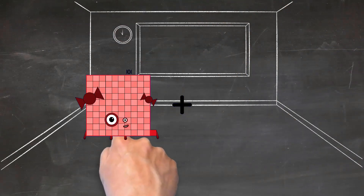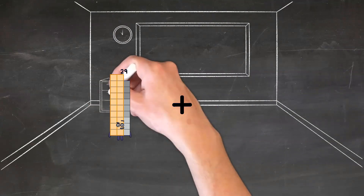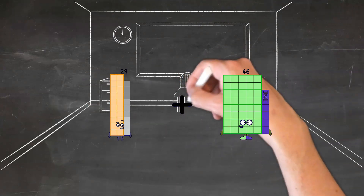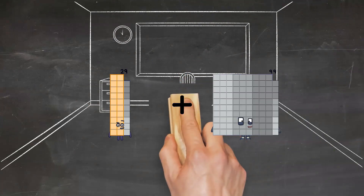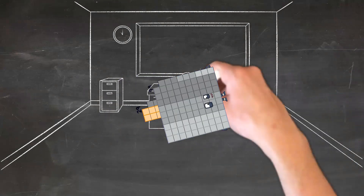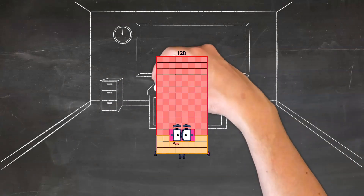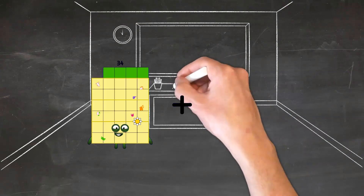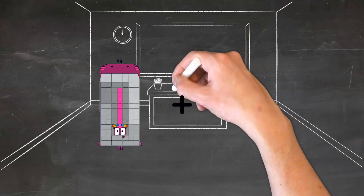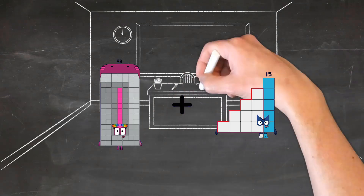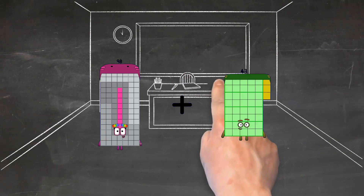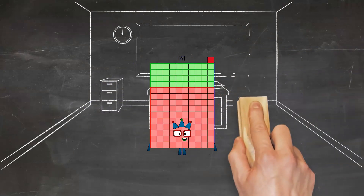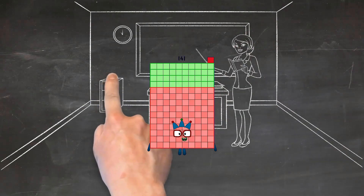29 plus 99 equals 128. 98 plus 43 equals 141.